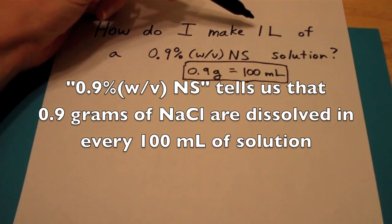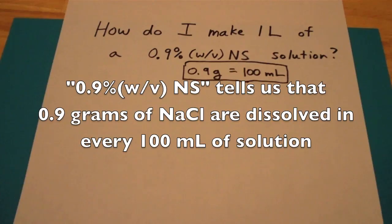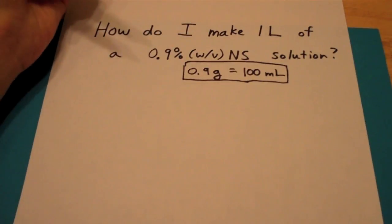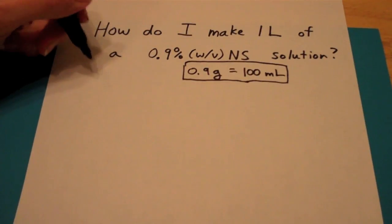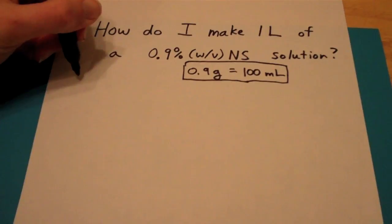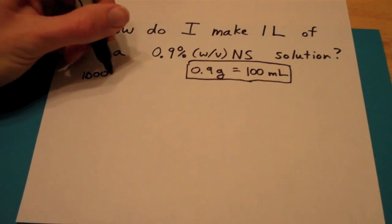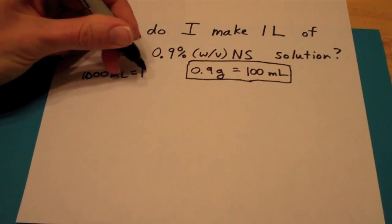I want a whole liter. What do I know about liters? We need to get liters to milliliters before we can convert it to grams. So what do I know? I know milli is a thousandth, so there's 1,000 milliliters in one liter.